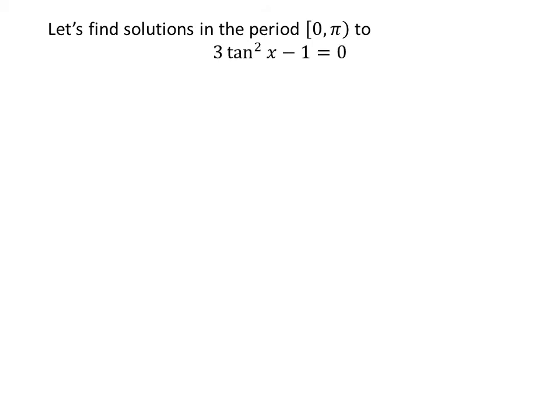Now let us find the solutions to the equation 3 times square of tangent of x minus 1 is equal to 0 in the period 0 to pi. Taking 1 from the left-hand side to the right-hand side gives us 3 times square of tangent of x is equal to 1.